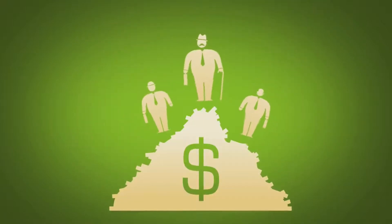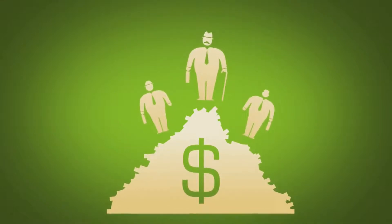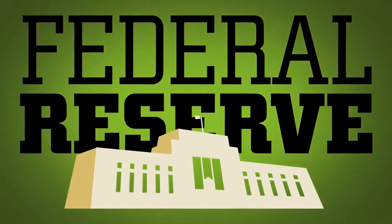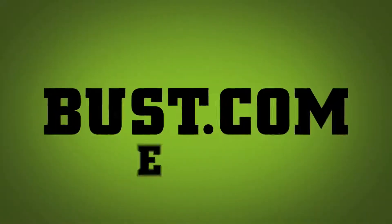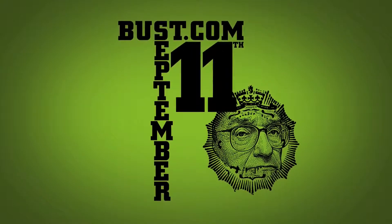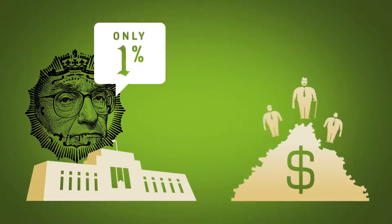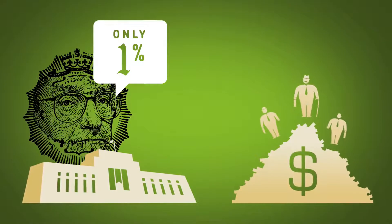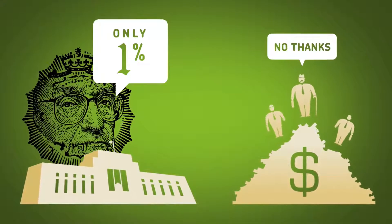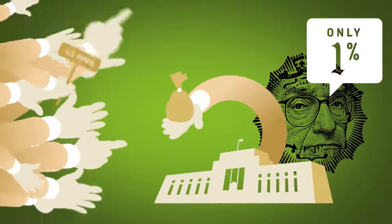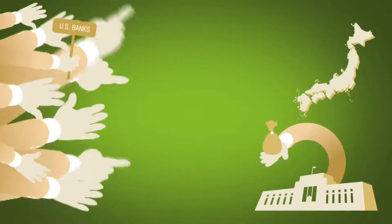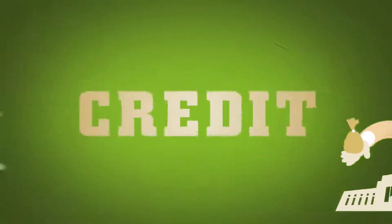Years ago, the investors are sitting on their pile of money looking for a good investment to turn into more money. Traditionally, they go to the U.S. Federal Reserve where they buy treasury bills, believed to be the safest investment. But in the wake of the dot-com bust and September 11th, Federal Reserve Chairman Alan Greenspan lowers interest rates to only one percent to keep the economy strong. One percent is a very low return on investment, so the investors say no thanks. On the flip side, this means banks on Wall Street can borrow from the Fed for only one percent. Add to that general surpluses from Japan, China, and the Middle East, and there's an abundance of cheap credit.